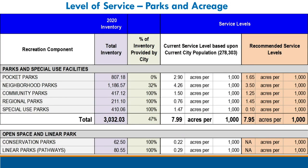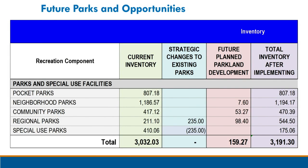We're also going to dive into level of service. We are very impressed with the amount of park acreage and facilities you provide to your community. We're anticipating coming out of this with your current level of service — X number of park acres for every thousand people. Given that your community will continue to grow but you also have undeveloped park land, we're not anticipating changing your level of service. We'll recommend that as you go forward, you look to develop the currently undeveloped park land in the ways your community wants to use it. We want to ensure that we right-size your level of service.